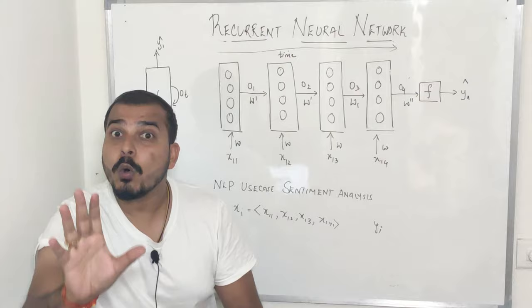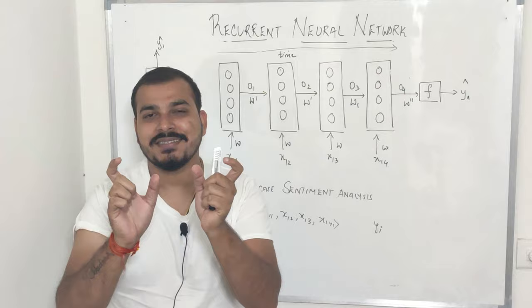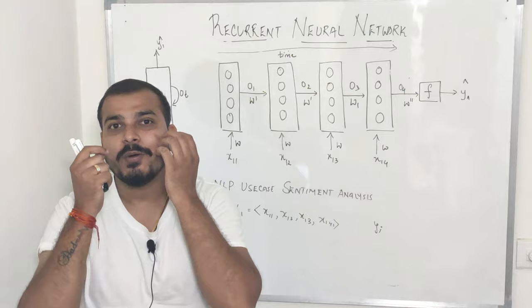Why I'm saying forward propagation over time? Because that is the main functionality behind RNN, behind the working of the RNN. So we'll try to understand what exactly it is.